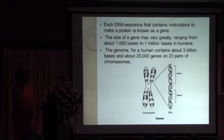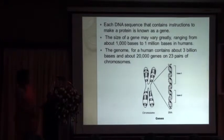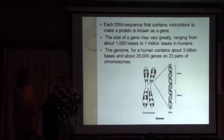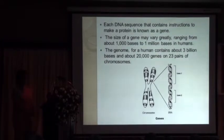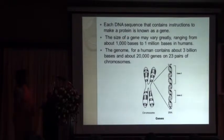You might have heard about proteins. Each DNA sequence which contains the instructions will form a protein — that is a gene. The size of a gene will vary; it can be a thousand base pairs or even up to one million base pairs in humans. You might have heard about the genome — human genome, bacterial genome, plant genome. The human genome contains three billion bases and roughly around twenty thousand genes, all contained within chromosomes.